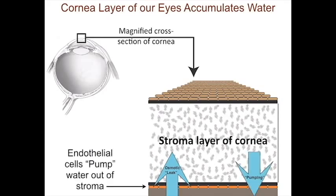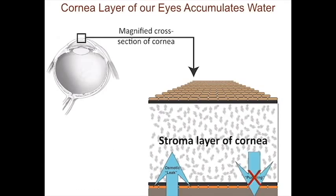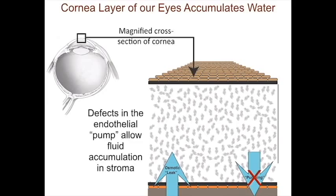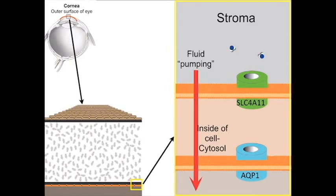If there are problems with this process, then water flow causes accumulation of water in the corneal stroma. This thickens the corneal stroma, and this leads to visual aberrations. A protein called SLC4A11 is found on the cell surface facing the stroma, and its job is to move water. It works in partnership with aquaporin-1 at the so-called apical surface. Together these maintain the fluid pumping function of the endothelial cell layer.